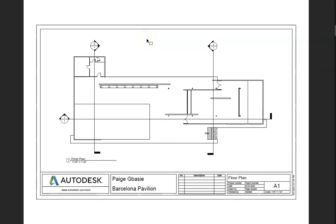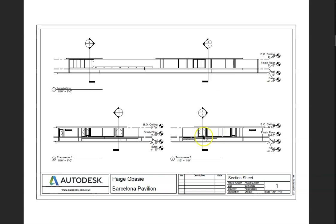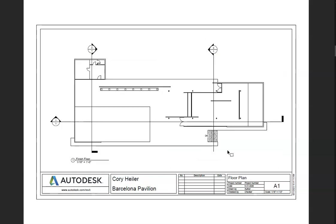We're going to move through these pretty quickly; they're all relatively similar and all look relatively good. I must have told them to put the section right through the stairs because everybody's is there — I might change that. When we look at it, it's a little odd to see the stairs that are cut there, and we also catch this little bit of wall. If you move this section into the room a little deeper, we could actually see the door and see the stairs in their entirety, which might help a little bit.